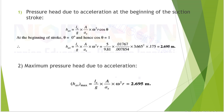We calculate the pressure head due to acceleration at the beginning of the suction stroke using HAS = (Ls/g)(A/as)ω²r cosθ. At the beginning of the stroke, θ = 0°, so cosθ = 1. Substituting all values gives HAS = 2.695 m. The maximum pressure head due to acceleration also occurs when cosθ = 1, so the maximum HAS = (Ls/g)(A/as)ω²r = 2.695 m.